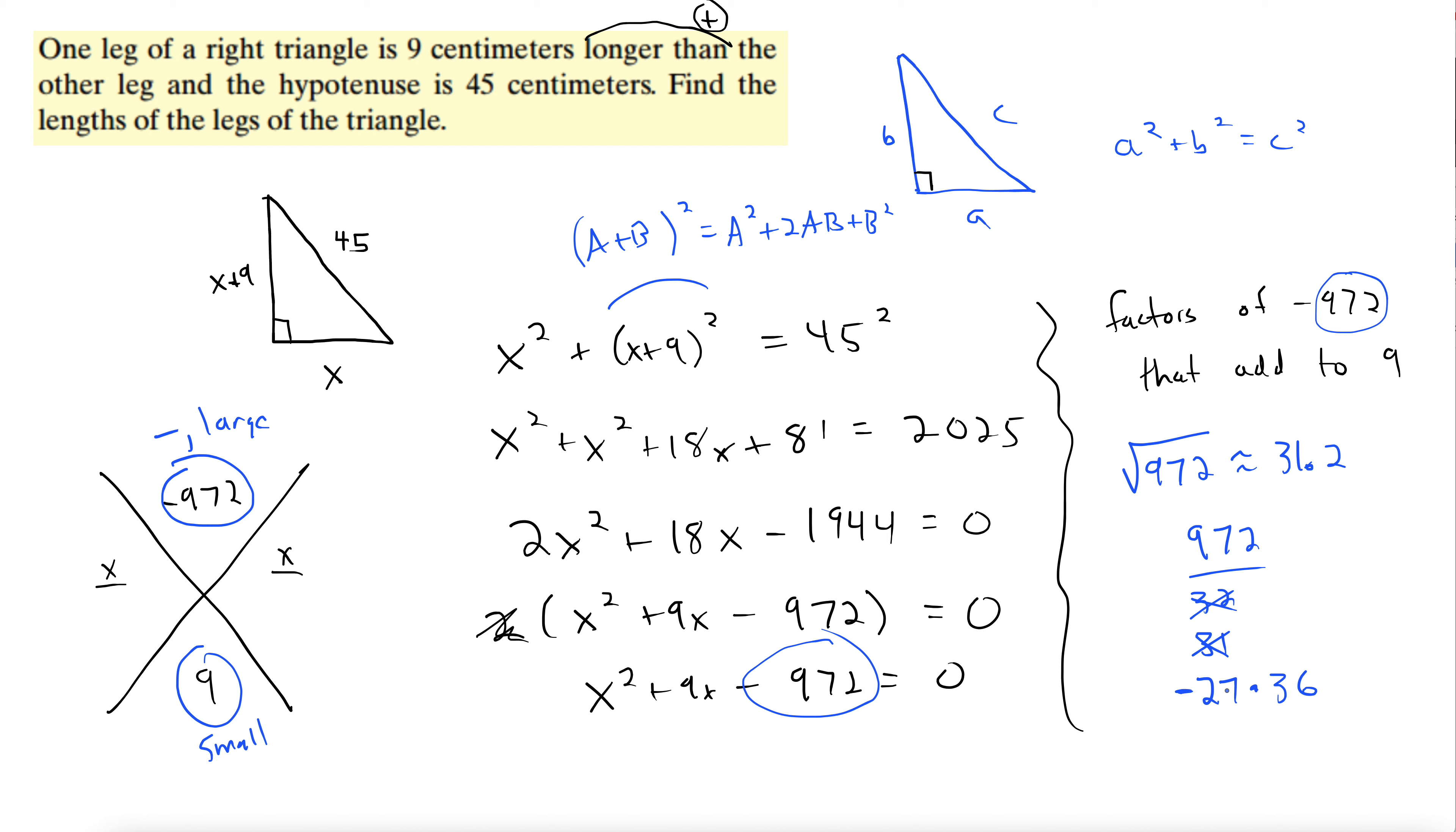So now let's just deal with the negatives. Since 9 is positive, I want the bigger number here to be positive. So we're going to write 972 as negative 27 times 36. And that gives us our factored form. So that square root trick is really useful. 36. So our factored form is x minus 27, x plus 36.